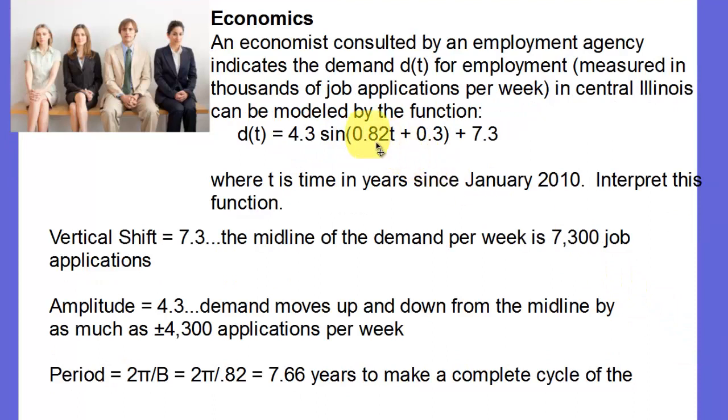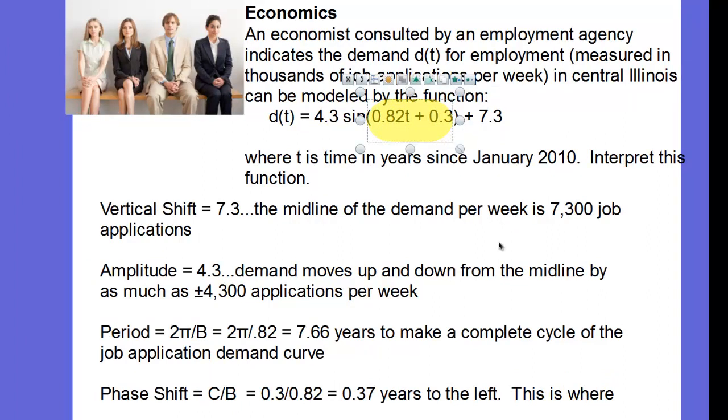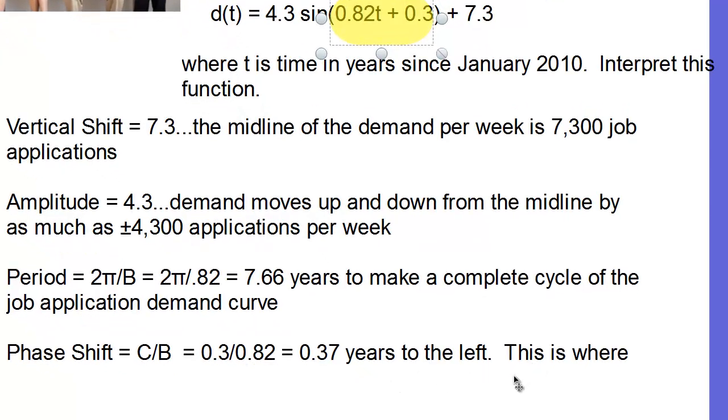The period, we're going to look at that B term to find the period. The period's 2π divided by B. 2π divided by 0.82 is 7.66 years to make a complete cycle of this job application demand curve. And finally, there is phase shift on this one, and we get the phase shift by looking at this entire thing. It's going to be C over B. Now, it is going to be a left-hand phase shift because that's a positive number there. It's going to be 0.3 divided by 0.82. So it's shifted 0.37 years to the left. And this is where the sine cycle actually begins at 7,300.